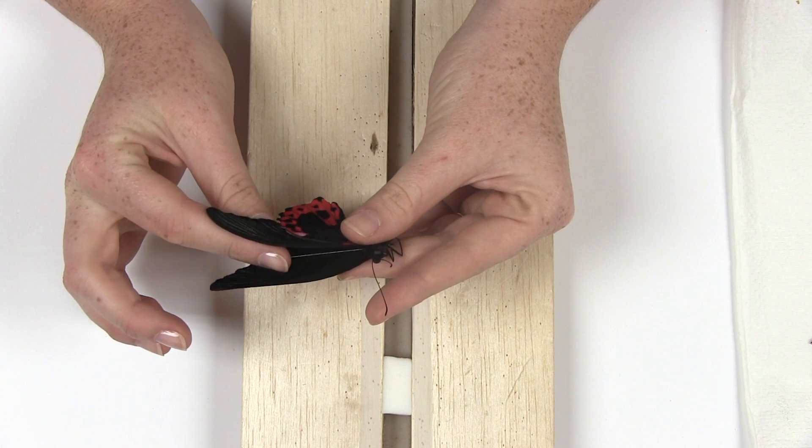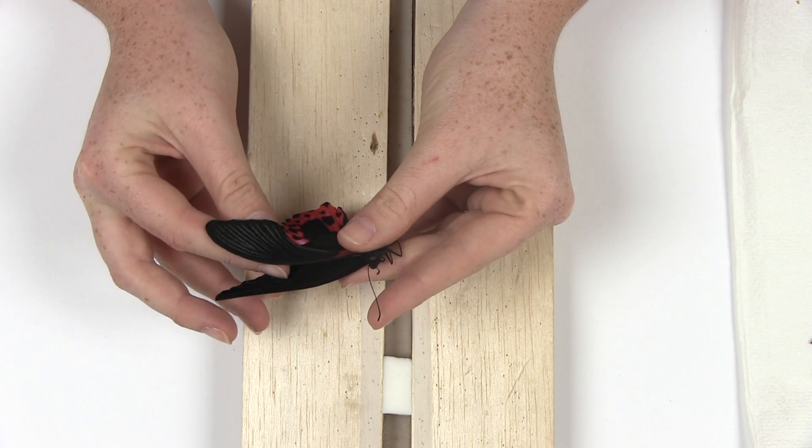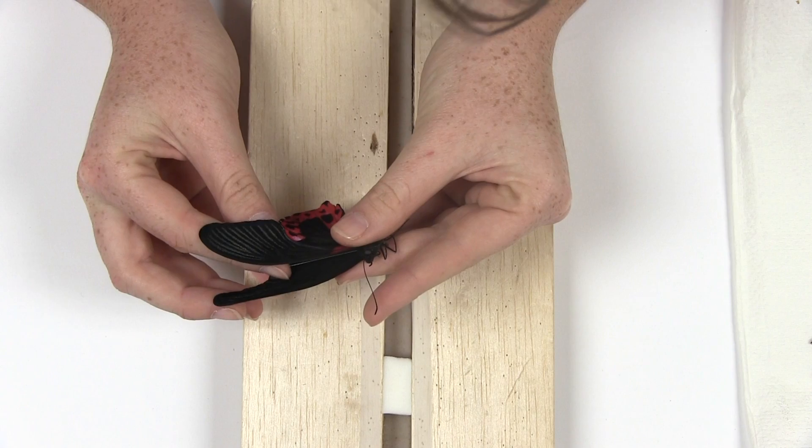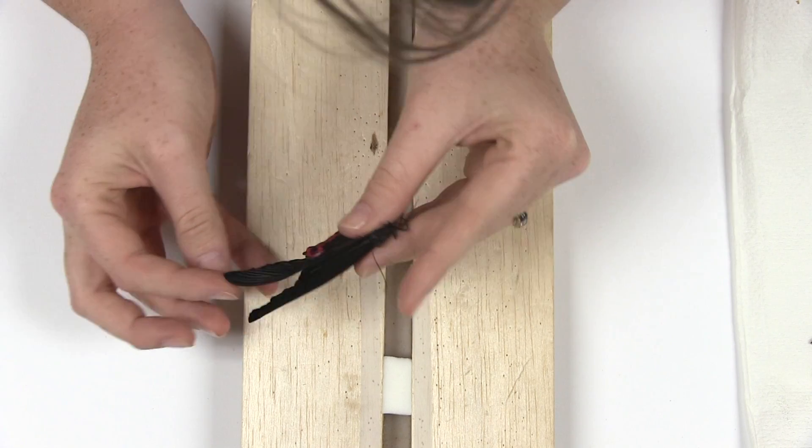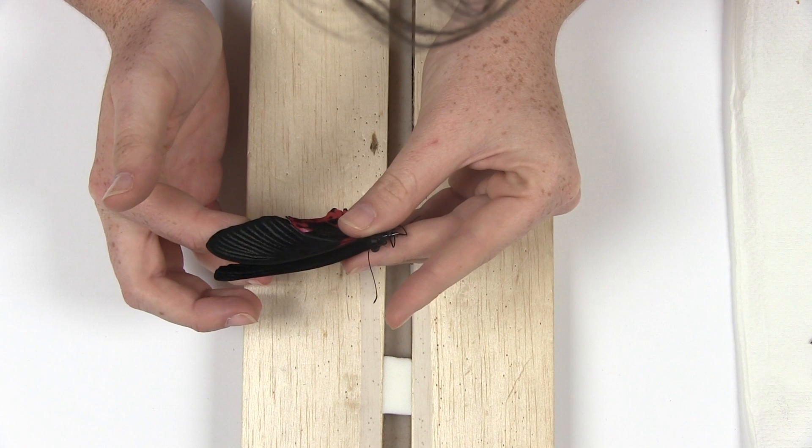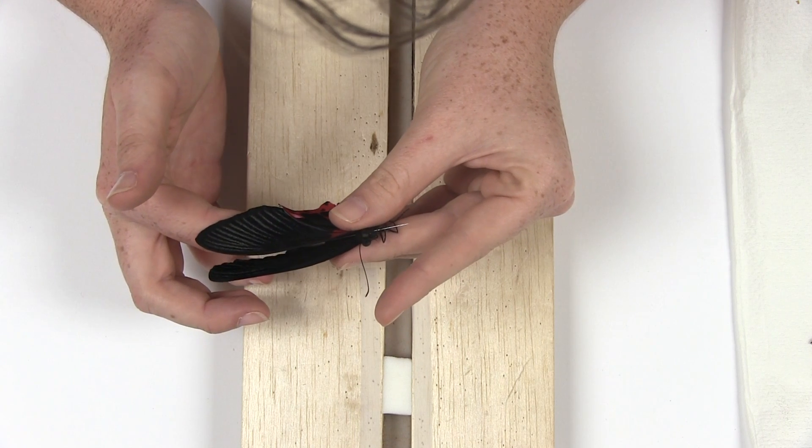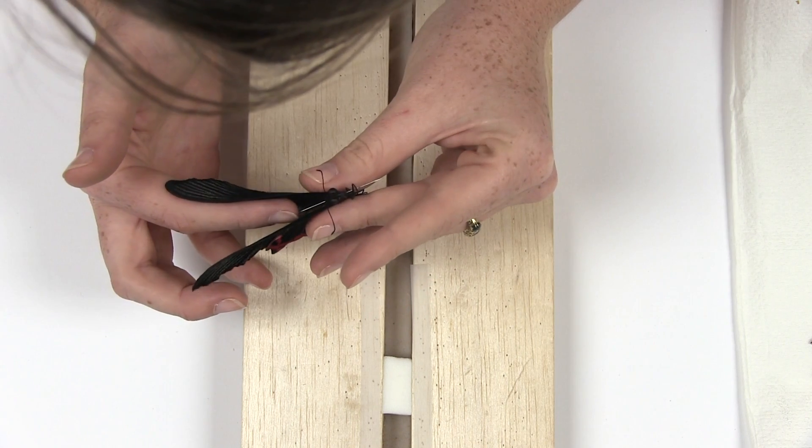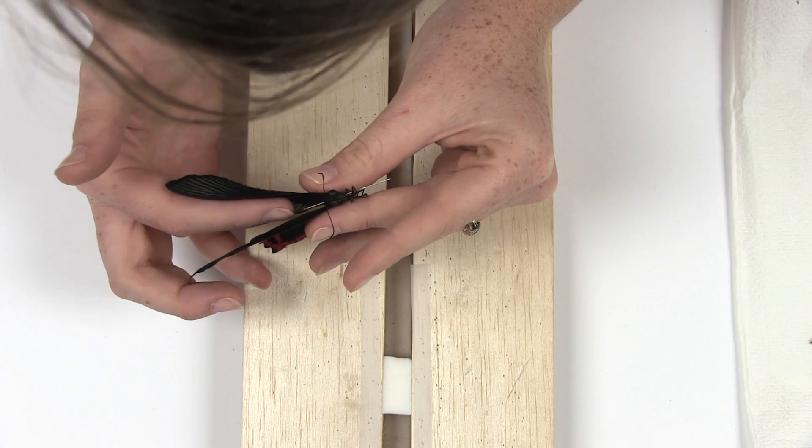Hold the insect gently with the wings folded. Try not to touch the wings in order to prevent damaging them. Use a number two or a number three insect pin and pin the butterfly through the middle of the thorax so that the pin emerges between the legs. The body of the butterfly should be one centimeter from the top of the pin.